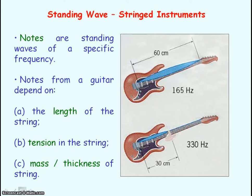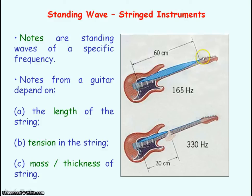Standing waves can be set up in instruments such as guitars. The notes represent a specific frequency of a standing wave, and the frequency you can get from a guitar depends on the length of the string — determined by where you position your fingers on the frets. The frequency also depends on the tension in the string, which can be adjusted by the tension bars. Finally, the frequency depends on the mass or thickness of the string, and guitars have strings of different thicknesses. Between these three factors, you can obtain a full range of notes and frequencies of sound.